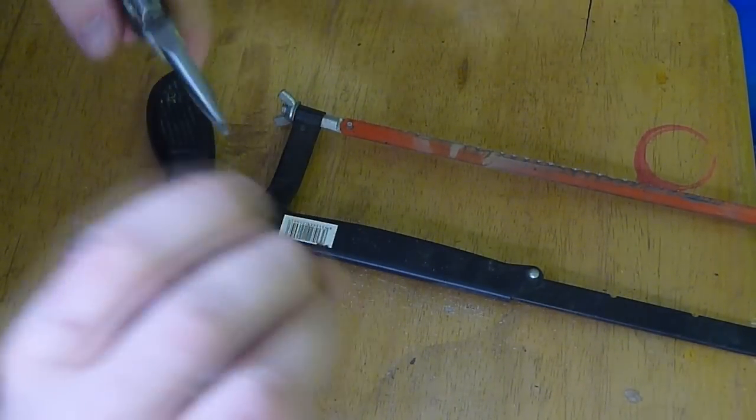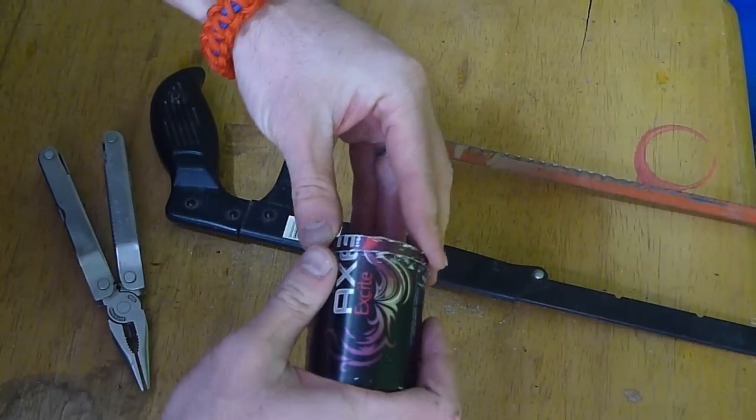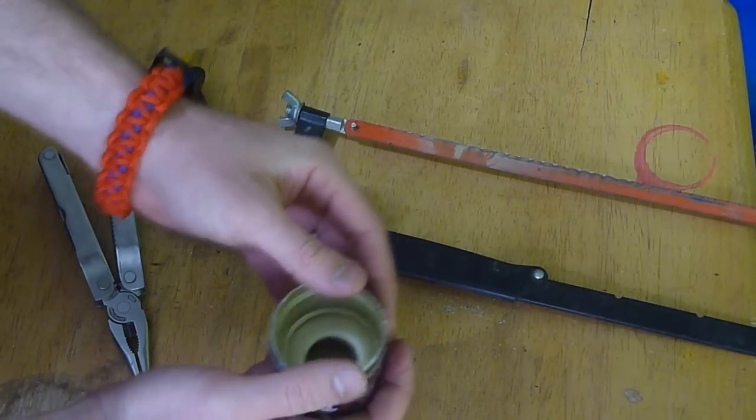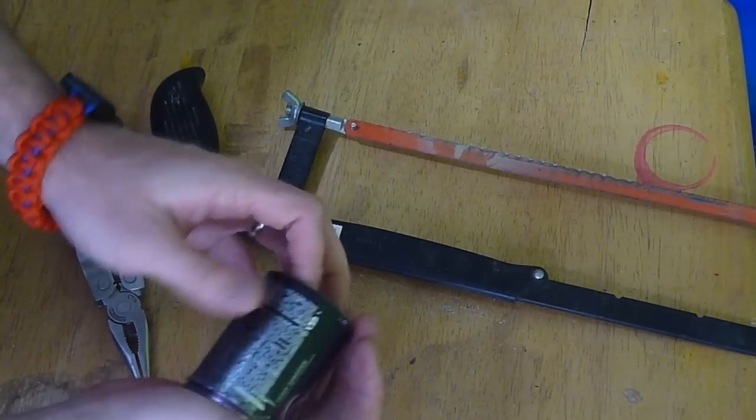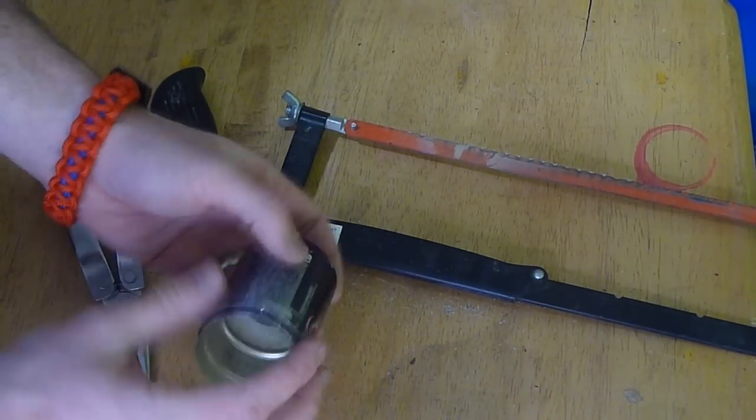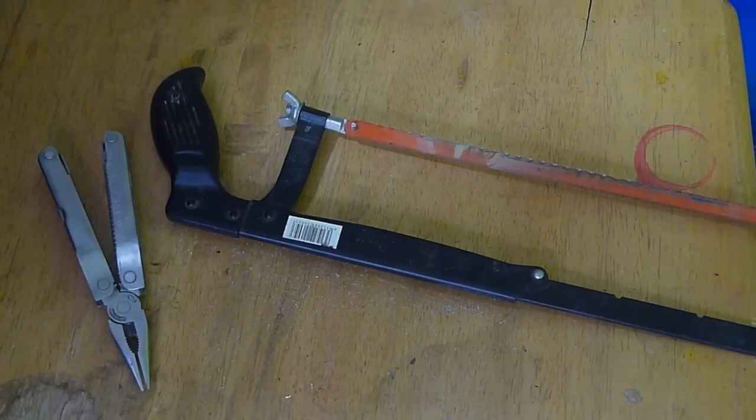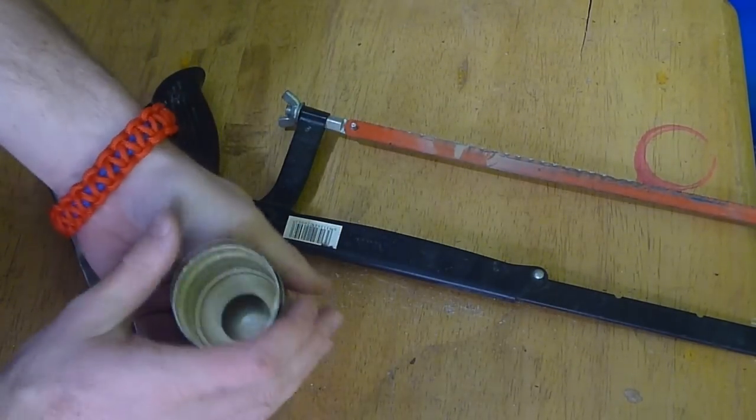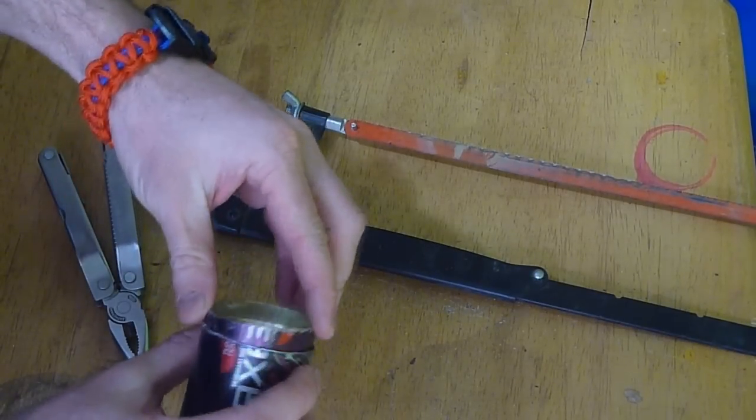You're going to slide these two together and you're going to use something flat, you can use the table if you want, just to push those in together. So it makes a good seal.